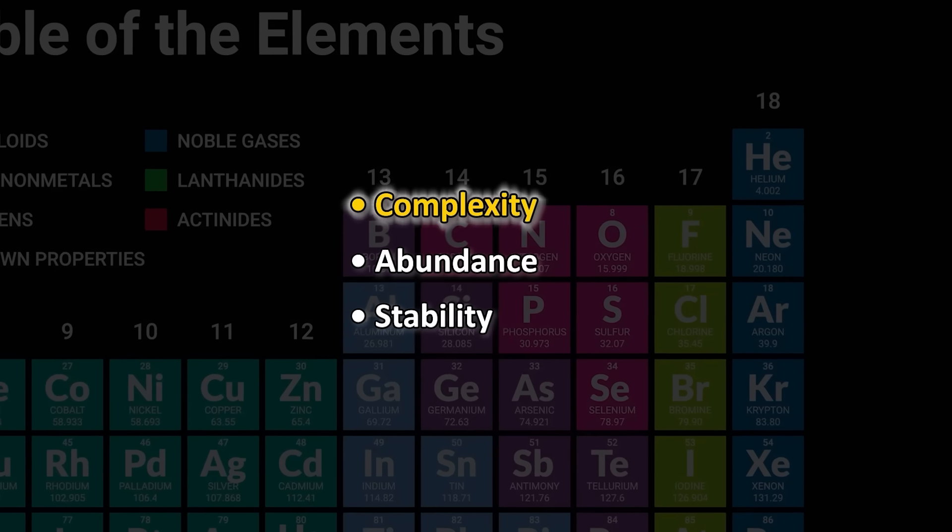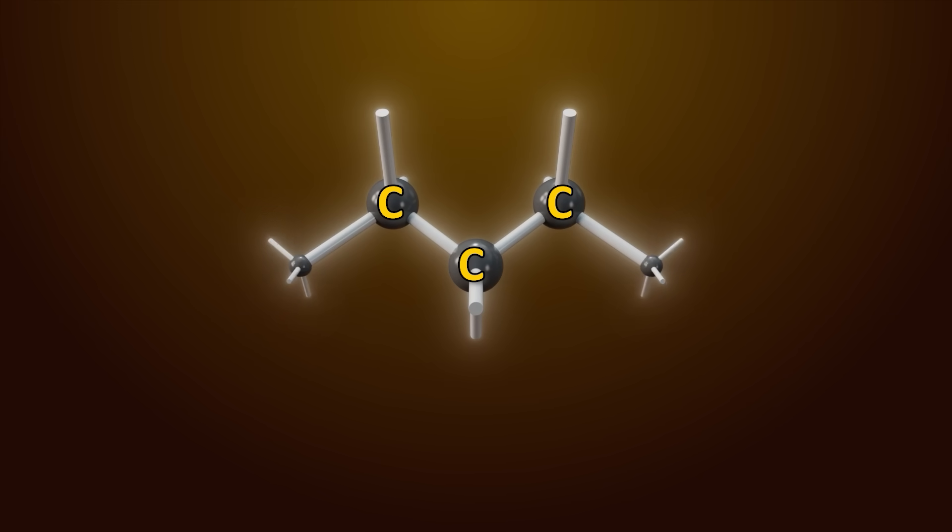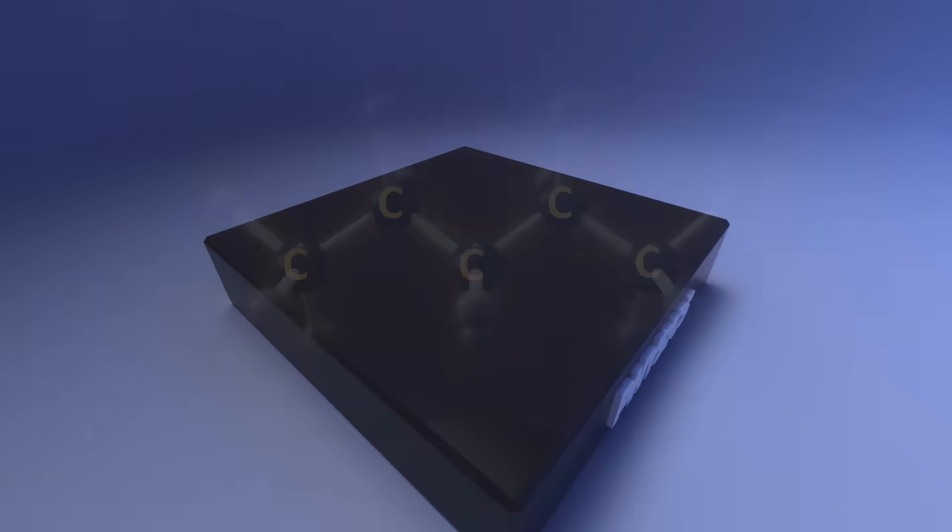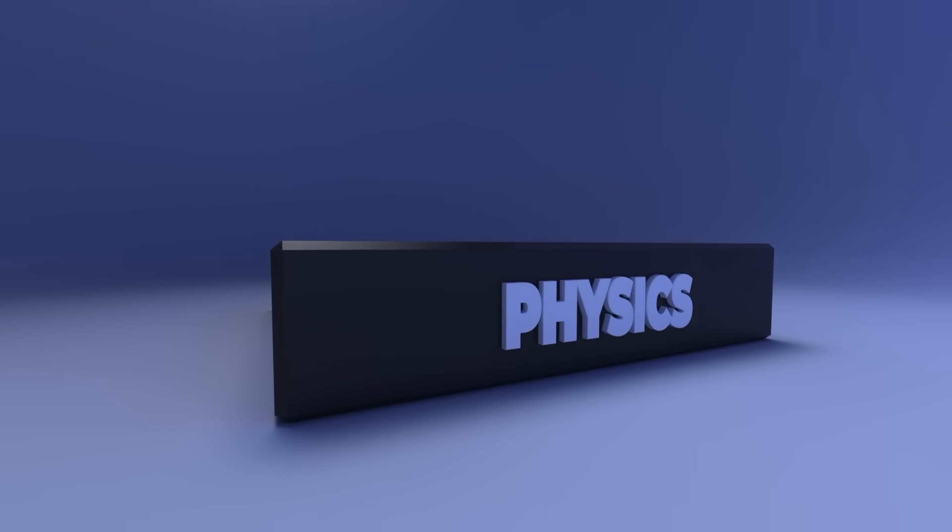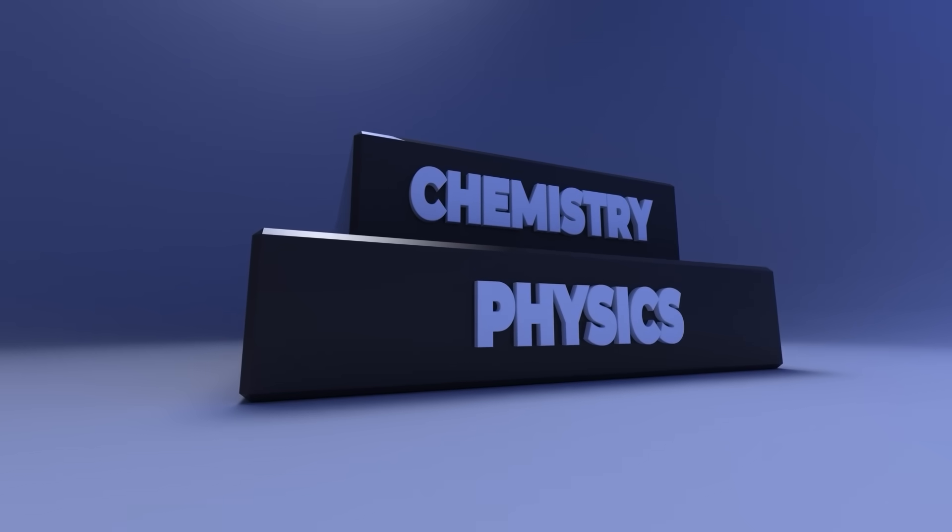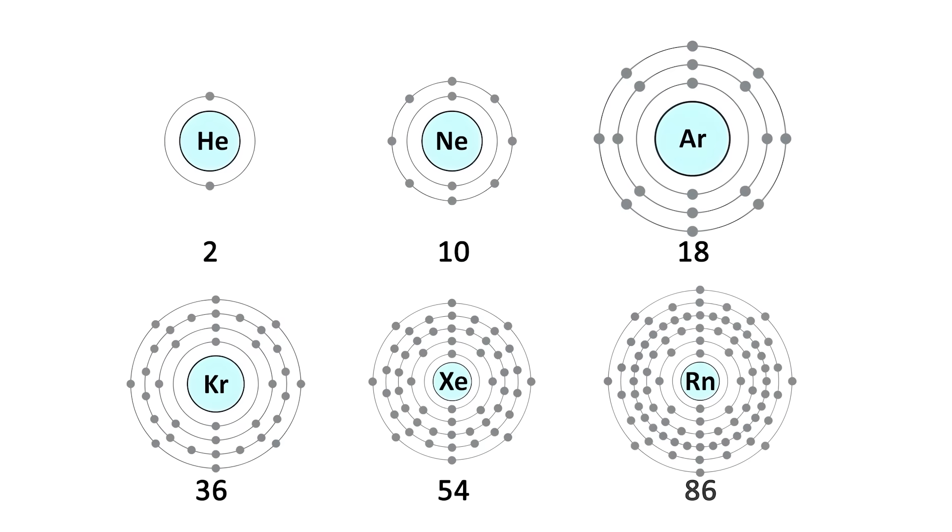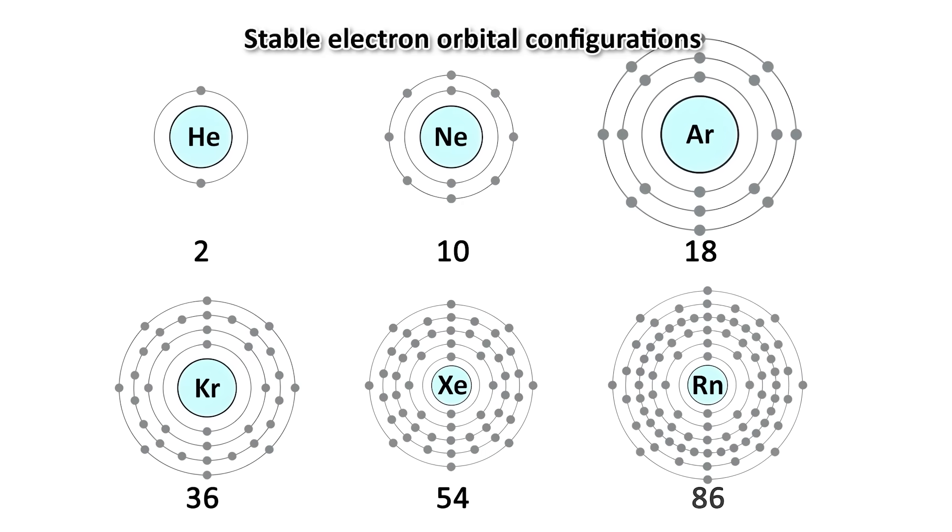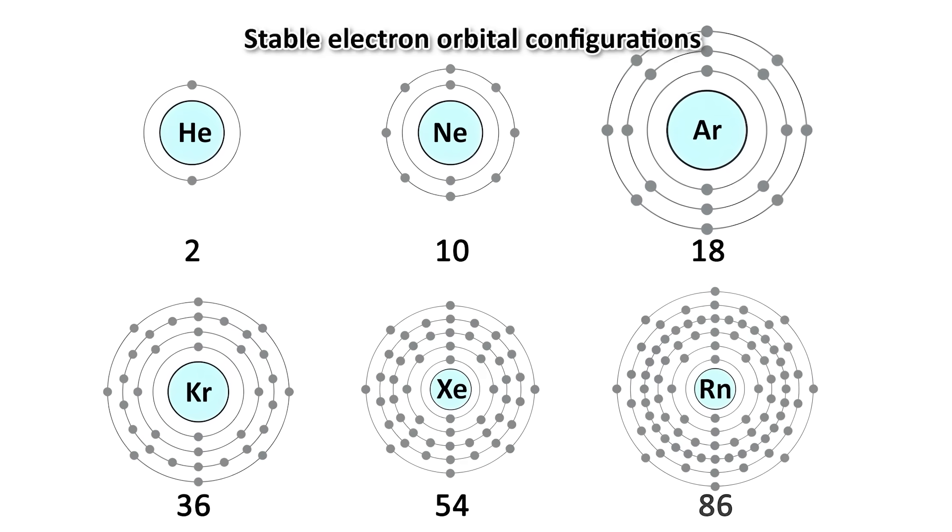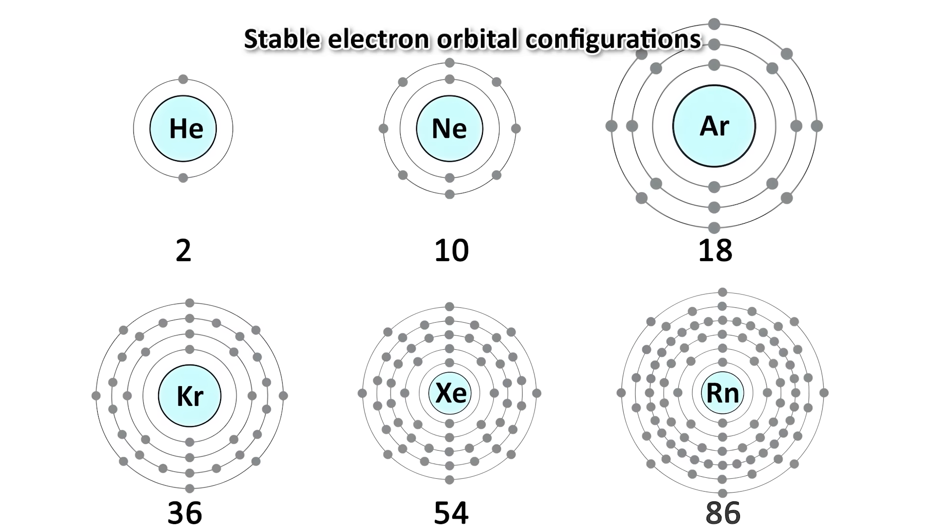Let's start with complexity. Carbon is able to form the complex molecular structures needed for the complex chemistry that life requires. To understand this, we have to look at the foundation of chemistry, which is physics, particularly quantum mechanics. Quantum mechanics tells us that some electron orbital configurations are more energetically favorable than others, making them more stable.